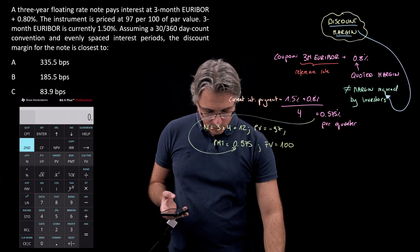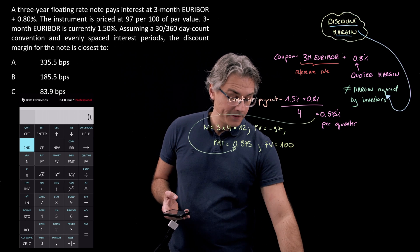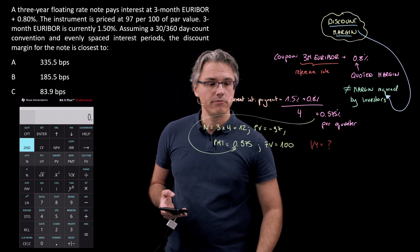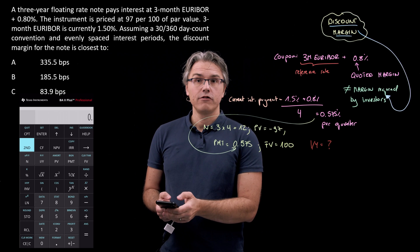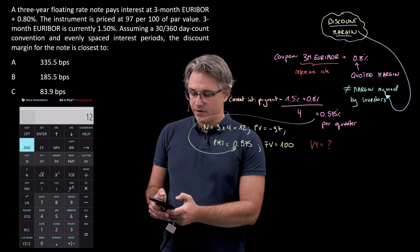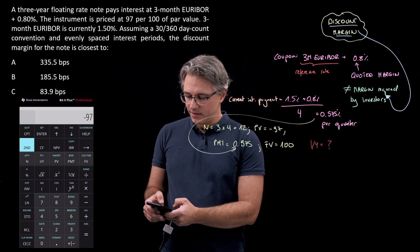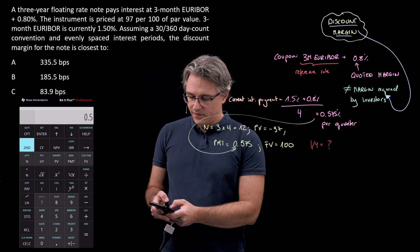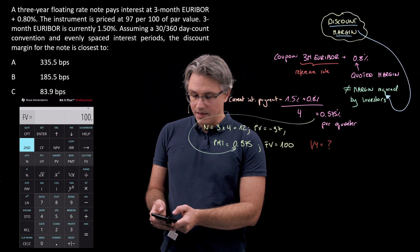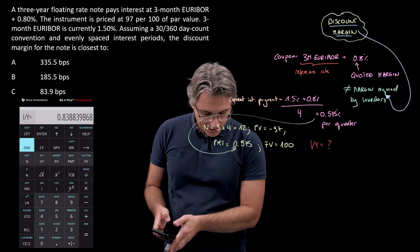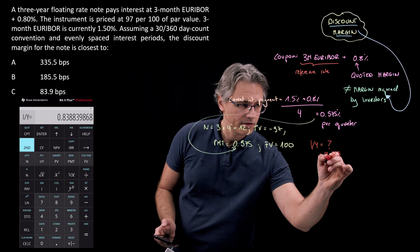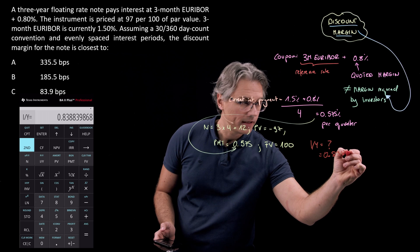Let's see what our calculator will give for I/Y, the yield—that's our unknown. Clear the TVM worksheet first to make sure you don't have anything residual. So 12 for N, then negative 97 for PV, 0.575 for PMT, and 100 for FV. I'm going to compute I/Y and my calculator displays 0.838.